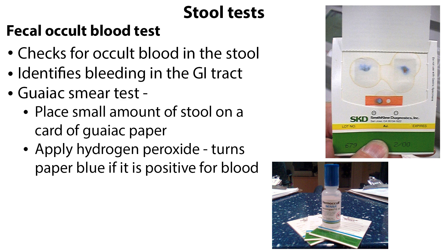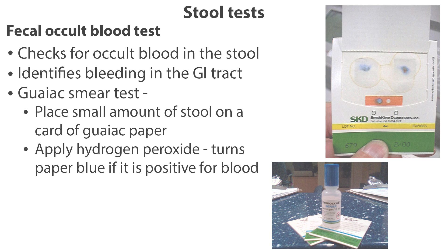A GUIAC smear test is used, which involves placing a small amount of stool on a card of GUIAC paper and applying hydrogen peroxide, which turns the paper blue if it is positive for blood.